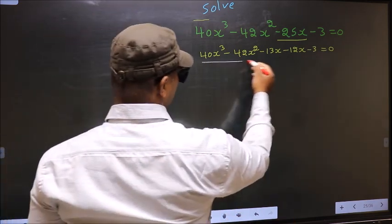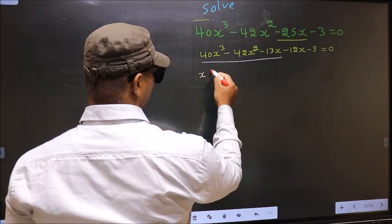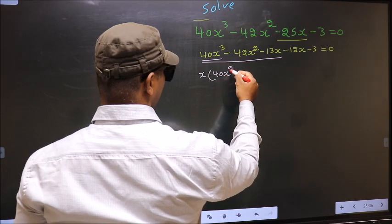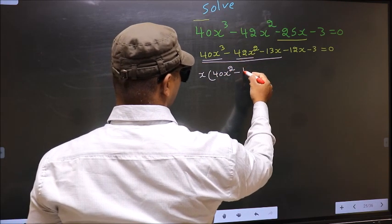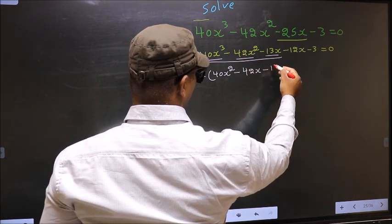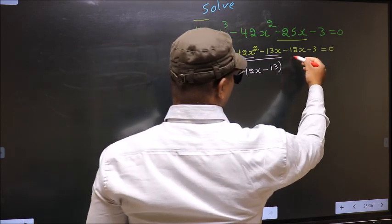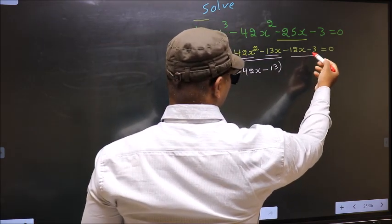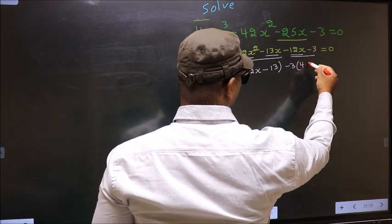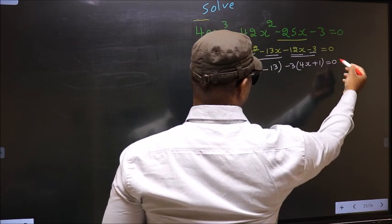Now from these three terms, what can be taken out common is x. So here you get 40x² minus, here you get 42x minus, from this x out you get 13. In the same way, what can be taken out common from these two terms is minus 3. So here you get 4x and here you get plus 1 equal to 0.